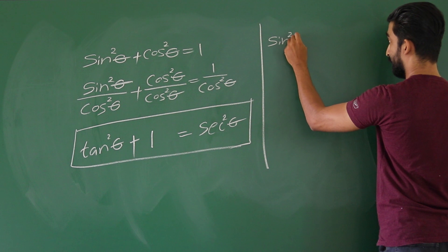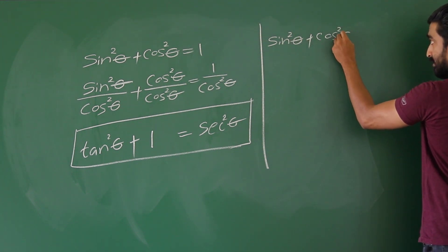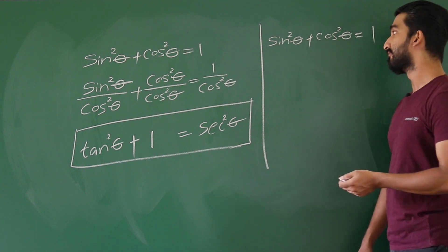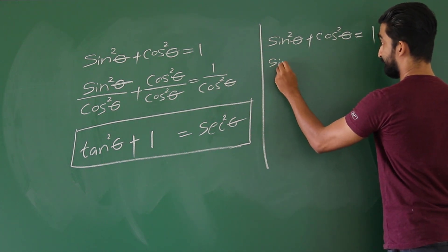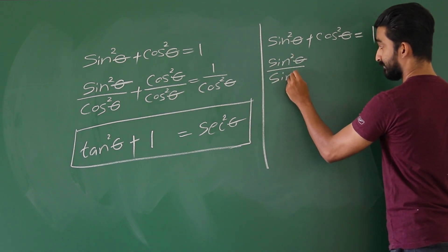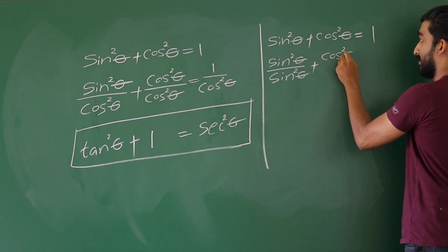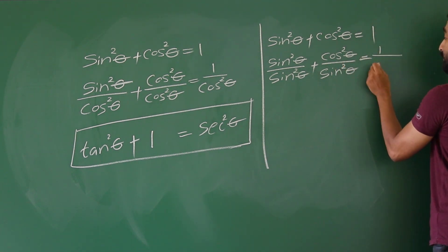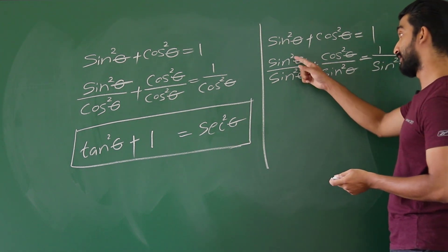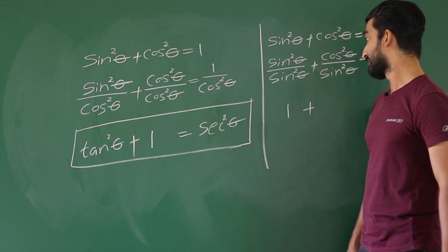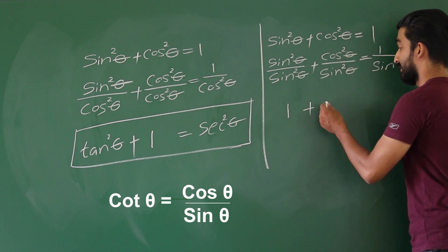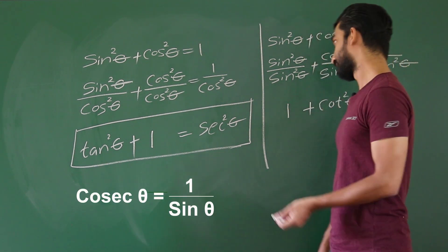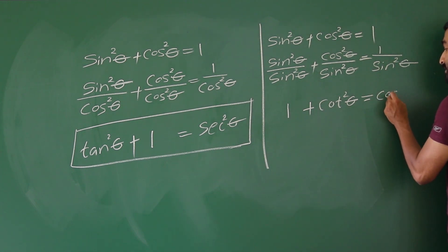sin²θ + cos²θ = 1 — previously we divided by cos²θ, but here we divide everything by sin²θ. So sin²θ/sin²θ + cos²θ/sin²θ = 1/sin²θ. sin²θ/sin²θ is 1. cos θ/sin θ is cot theta, so cos²θ/sin²θ is cot²θ. And 1/sin theta is cosec theta, so 1/sin²θ is cosec²θ.